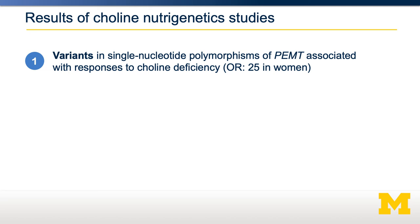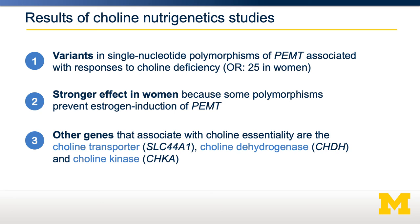Now why was it stronger in women? It turns out the polymorphism prevents the estrogen-induced transcription of PEMT. In men, there is no estrogen-induced transcription of PEMT, so that variant plays less of a role. There have since been other genes associated with choline essentiality, including choline transporters, choline dehydrogenase, and choline kinase. Variants in any of these can affect whether or not you are required to get choline in your diet, or whether you can make and use sufficient choline yourself.